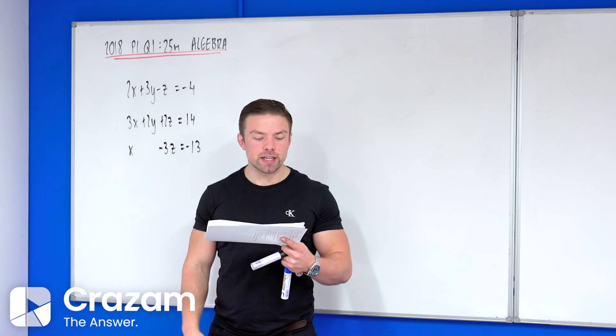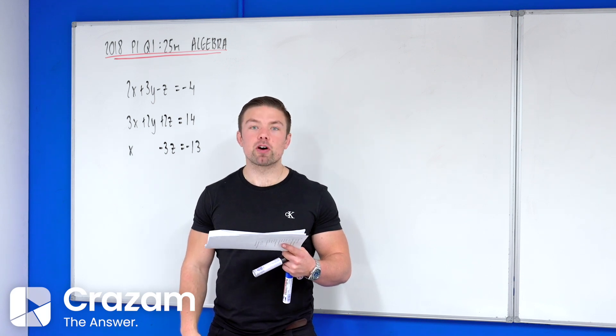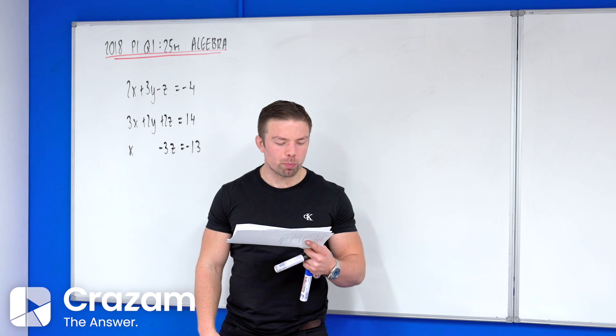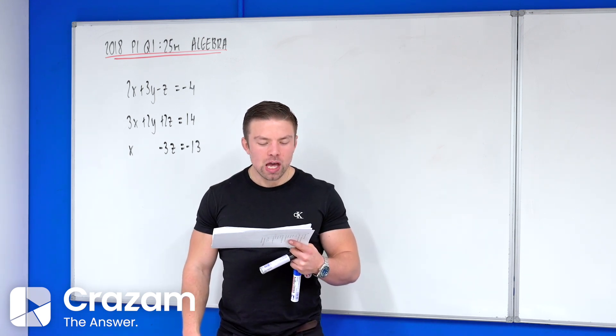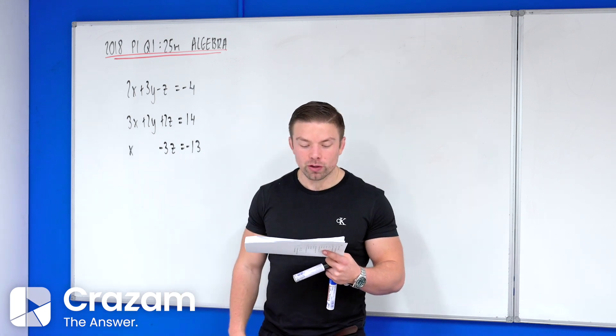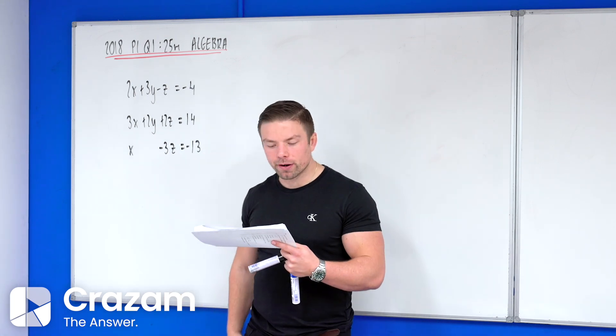This is exam paper 2018 question 1, 25 marks, and it is an algebra question. So part A says solve the simultaneous equations and we have three equations with three unknowns. I have it up on the board here behind me.